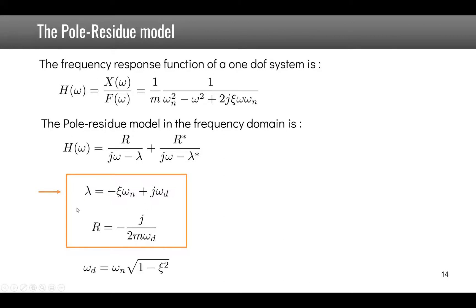Here we are interested in lambda so if we represent lambda in the complex plane we see that it has a real part and an imaginary part. As you see the real part is negative and the imaginary part is omega d so the amplitude of the vector, the distance from the origin, can be shown to be omega n.